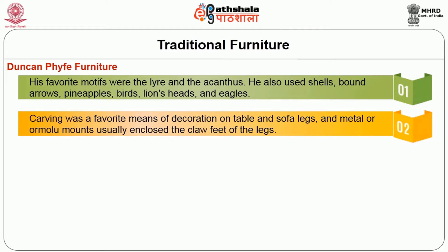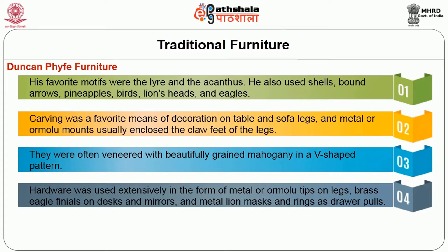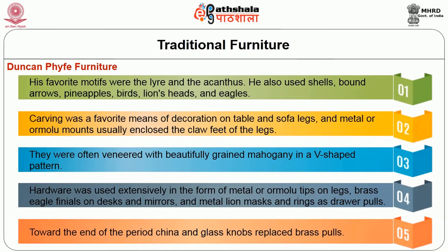Carving was a favorite means of decoration on table and sofa legs, and metal or ormolu mounts usually enclosed the drawers. Drawers were often veneered with beautifully grained mahogany in a V-shaped pattern. Hardware was used extensively in the form of metal or ormolu tips on legs, brass eagle finials on desks and mirrors, and metal iron mask and rings as drawer pulls. Toward the end of the period, china and glass knobs replaced the brass pulls.